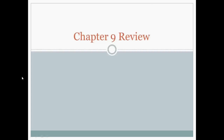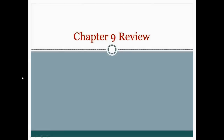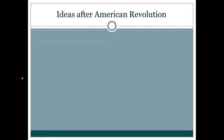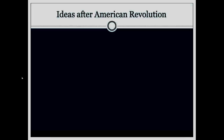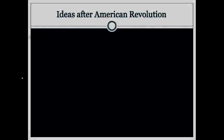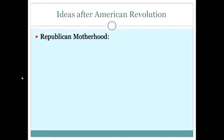Hello AP people! We have a quick video today on chapter 9. We're going to be discussing the Articles of Confederation and the Constitution. Key ideas after the American Revolution — so post-1783, what are some big ideas that people in this country are focusing on?